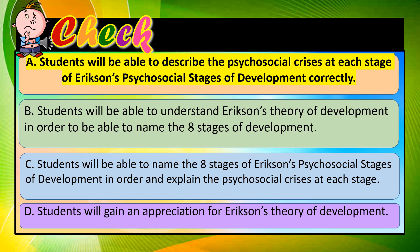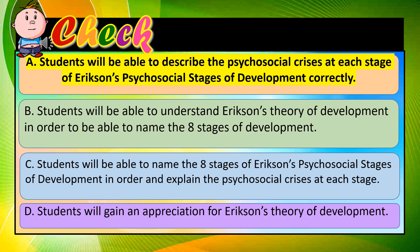Option A is correct because this learning objective is clear and specific about what the student should be able to do in measurable terms — that is, 'to describe' — and it focuses on a singular concept: crisis at each stage. Option B focuses on a singular concept but the term 'understand' is vague and not measurable or observable. Option C is clear and specific but incorporates two different concepts: naming the stages and explaining the crisis at each stage. Option D is not measurable — 'appreciation' is not specific about what students should know or be able to do.